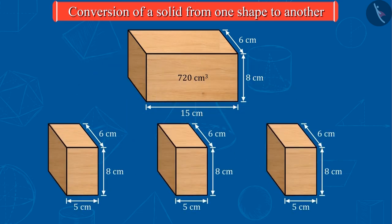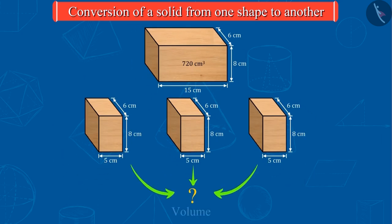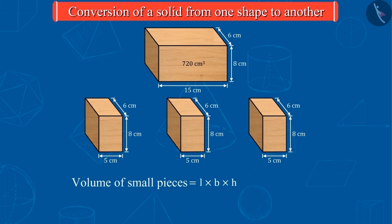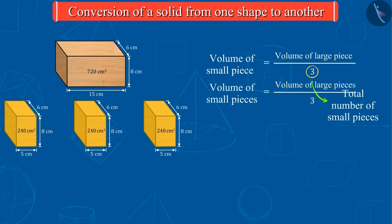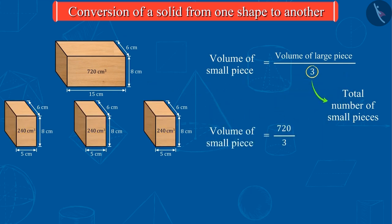If this piece of wood is cut into 3 equal pieces like this, can you find the volume of each small piece? Well done! The volume of each small piece is 240 cm³. You can see here that the volume of each small piece is equal to one third of the volume of the larger piece.